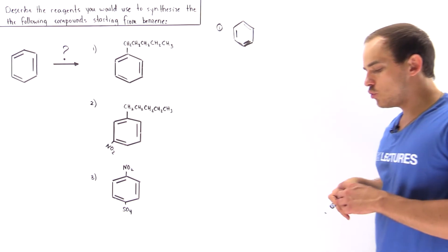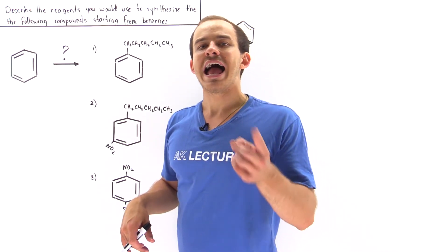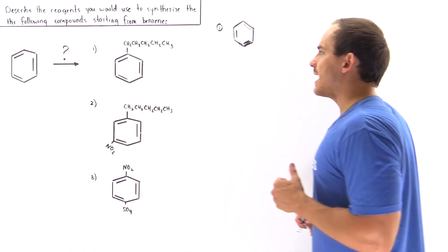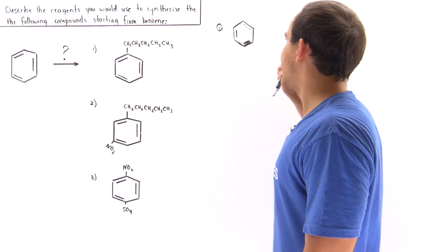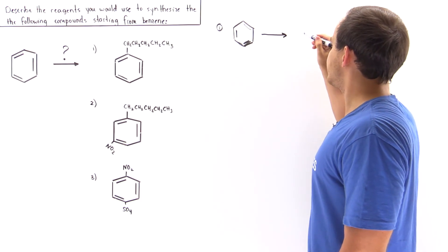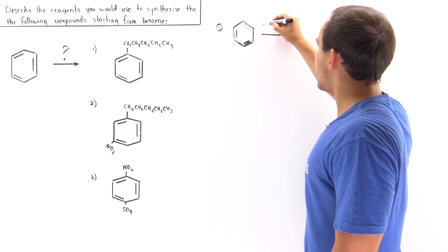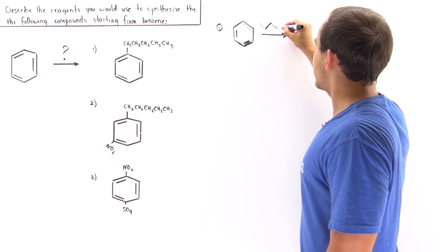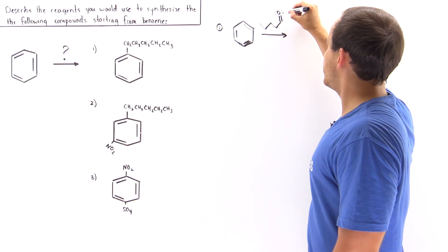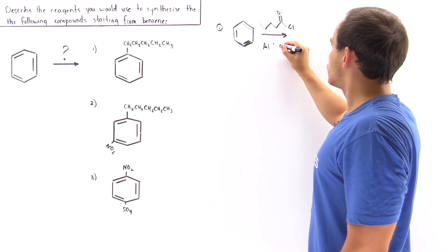Instead of using Friedel-Crafts alkylation, we can use the Friedel-Crafts acylation, which doesn't allow any rearrangement on this group to take place. So we take our benzene and react it with our acetyl chloride — which has five carbons — and we also mix it with aluminum chloride.